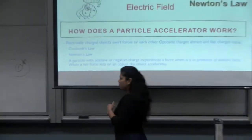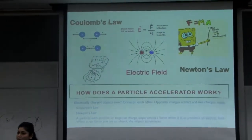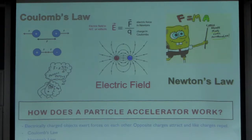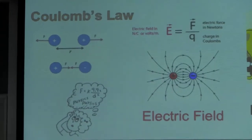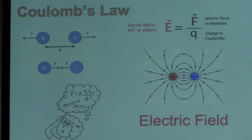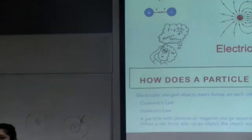Now let's move on to a very important question: how does a particle accelerator work? How does it accelerate charged particles? The working principle is based on Coulomb's law, Newton's law, the idea of electric field, and the concept of magnetic field. If two like charges — for example two positive charges — are sitting at some distance apart, they experience a repulsive force. If they are unlike charges, they experience an attractive force. Charged particles experience force due to the presence of other charged particles nearby, and this force causes acceleration according to Newton's second law of motion.